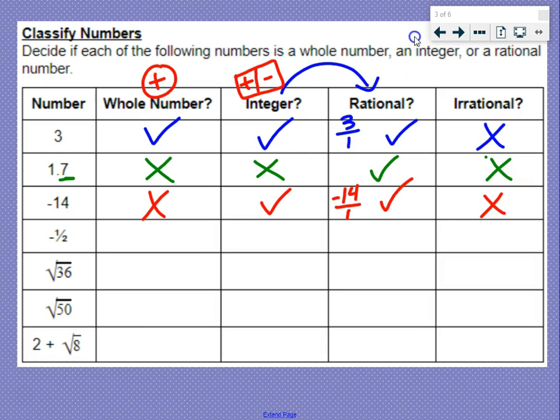Negative one-half. It's not a whole number. It's not an integer because it's a fraction, and integers are whole numbers, positive and negative. Is it rational? Yes, because it's a fraction. One-half is a fraction. Just because it's negative, it's still rational. It's not irrational because it is rational.